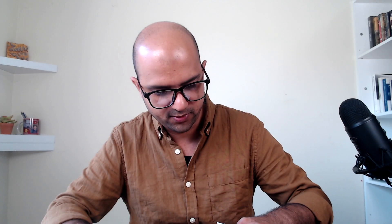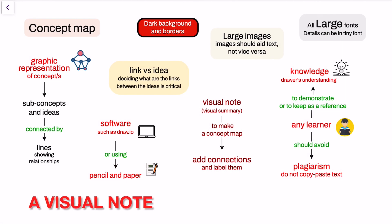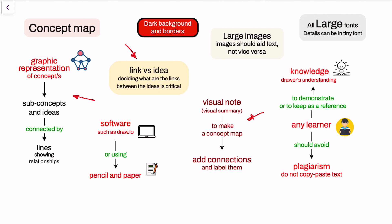The first thing we have to understand when drawing a concept map is that a concept map is more than a visual note. A visual note may have several ideas put together, but in a concept map, these ideas or concepts must be connected — they have to be connected. Unconnected concepts hint that you haven't assimilated or synthesized all the ideas that you have. For a concept map to be meaningful, all the concepts must be linked and all the links must be labeled. All the associations must be labeled very clearly.